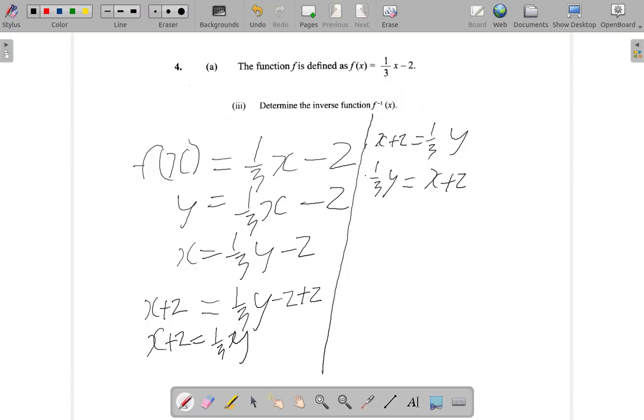If you multiply this by 3, guess what? 3 cancel 3 and you have 1 y which is the same as y. But at the same time, if you multiply the left by 3, you must multiply the right by 3. So you have 3 times x plus 2. So y is equal to 3 times x plus 2.